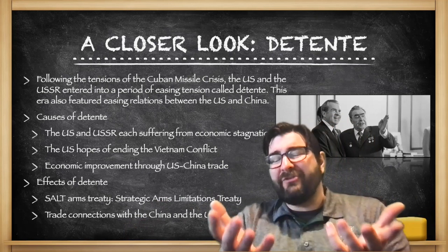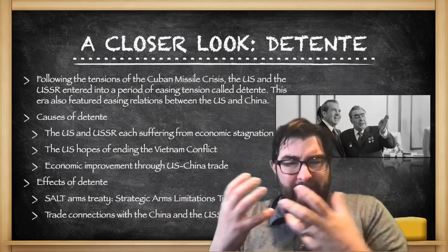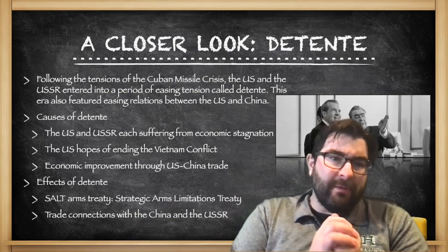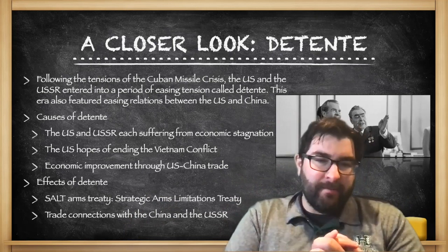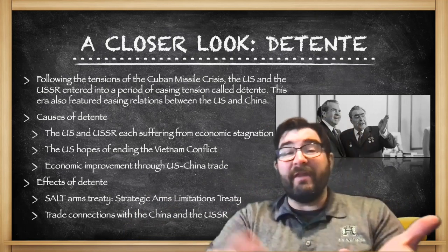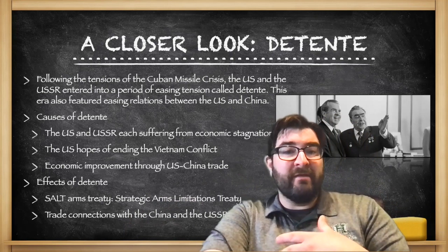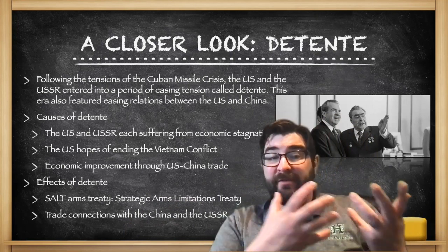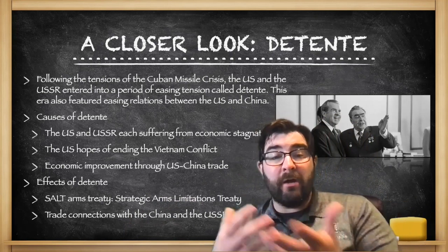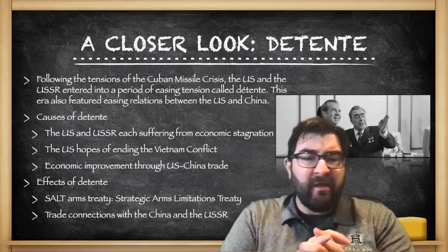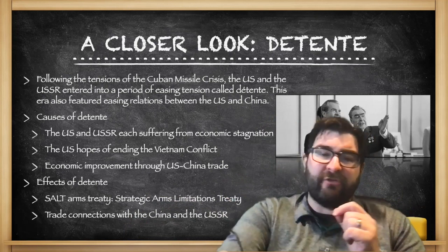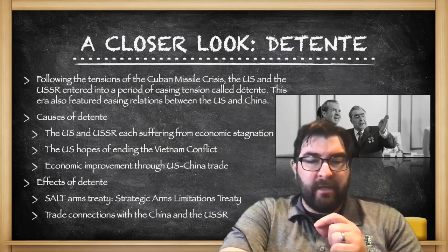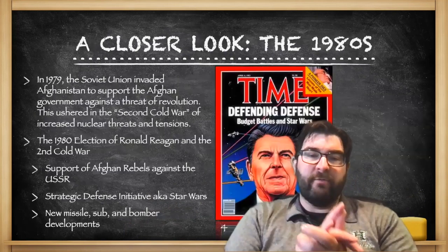Also, the threat of nuclear war that became so clear with the Cuban Missile Crisis was always there. Some of the effects of detente will be arms reduction talks and treaties, like the Strategic Arms Limitations Treaty, SALT, and new trade connections with the Chinese and the Soviet Union for the United States.